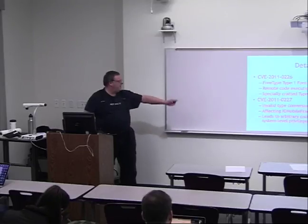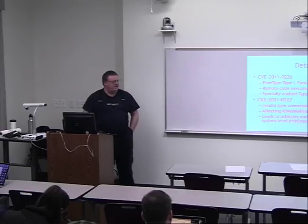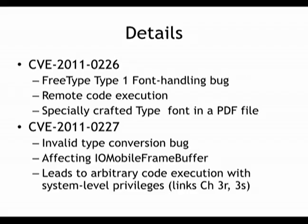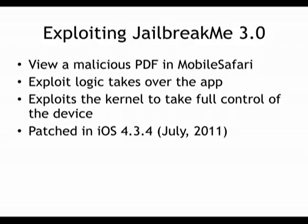Of course, that means you could do this to people who did not want to jailbreak their device by getting them to view a malicious page. There was a font handling bug in a PDF file, and then a type conversion bug that led to arbitrary code execution with system-level privileges — the kernel exploit. This allowed modifying the OS and removing Apple's protection.